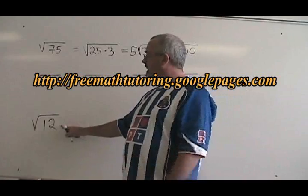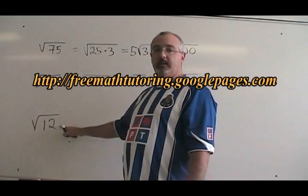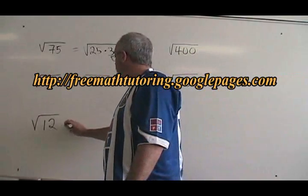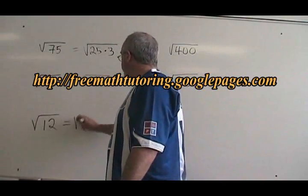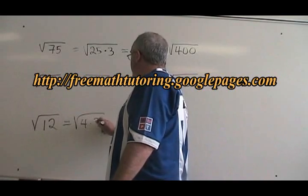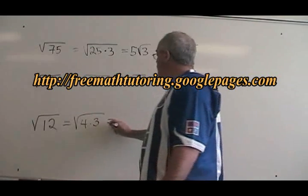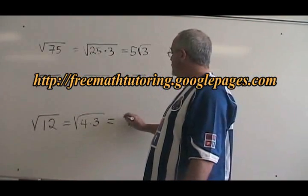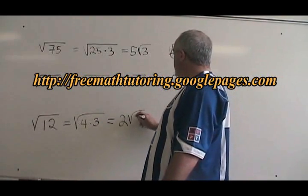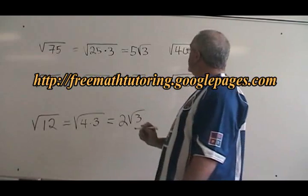The largest factor of 12 that is a perfect square is 4. So I write 4 times 3. The square root of 4 is 2, it comes out of the radical, and the 3 is trapped inside.